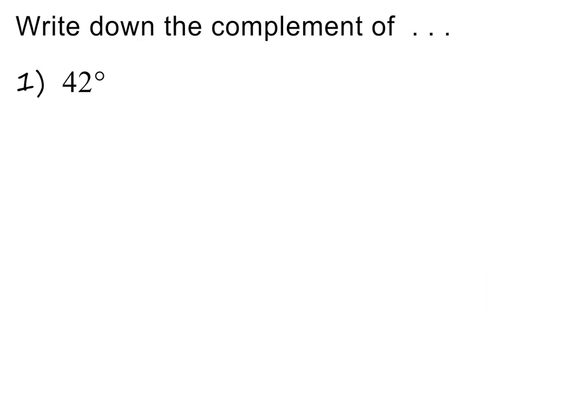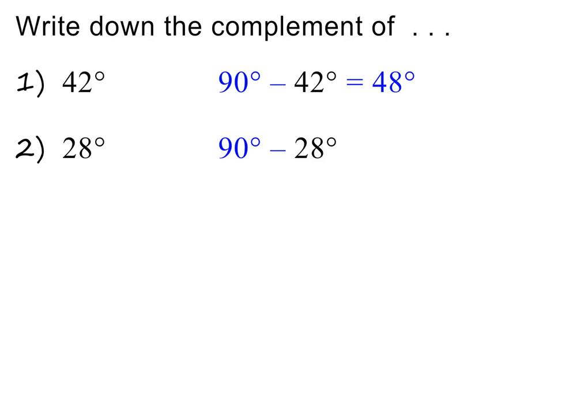Here we are asked to find the complement of 42 degrees. In other words, we need to find a second angle so that 42 degrees and this second angle are complementary angles. To find this complement, we simply subtract 42 degrees from 90 degrees. The complement of 42 degrees is therefore 48 degrees. Please pause and find the complement of 28 degrees. To find it, we again subtract the given angle from 90 degrees. The complement is therefore 62 degrees.